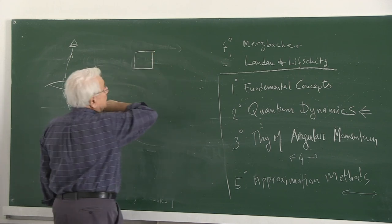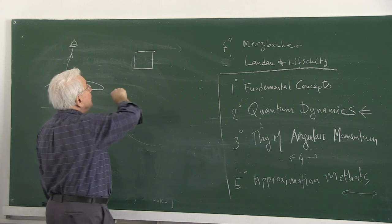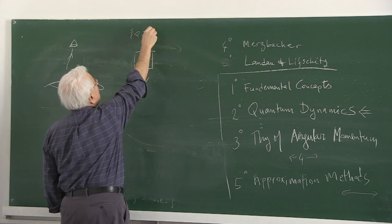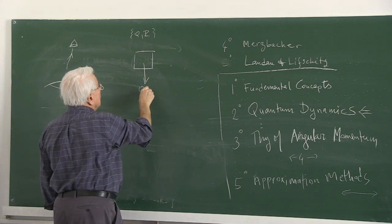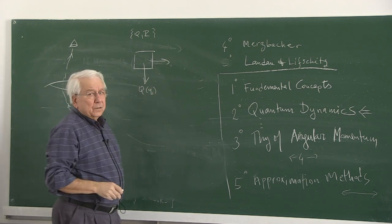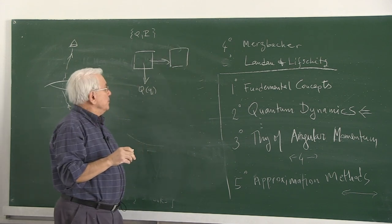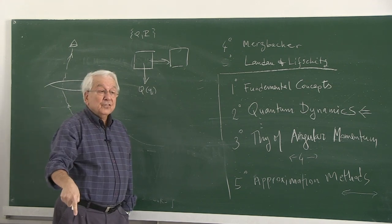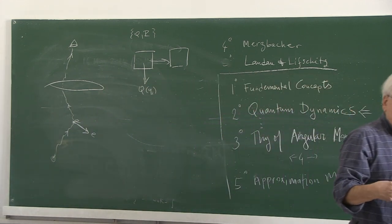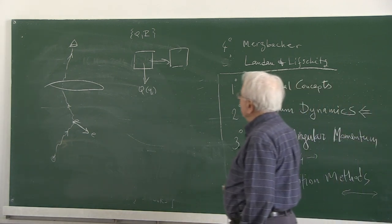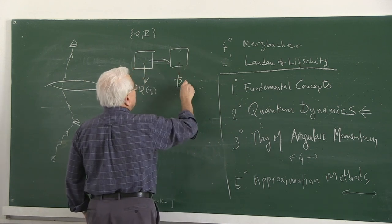Suppose here I carry out a measurement of q — mimicking x and p there — and found a value like q1. The system evolved, and I can think of making a measurement again. If I repeat the same measurement of q immediately after, before the system disintegrates or decays, I will always find q1.